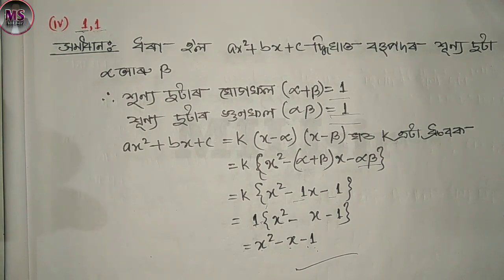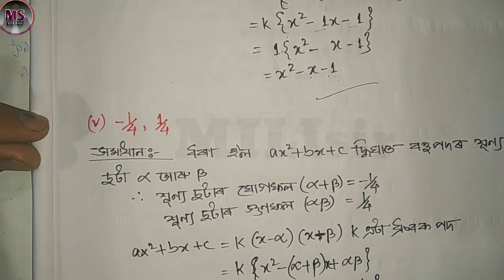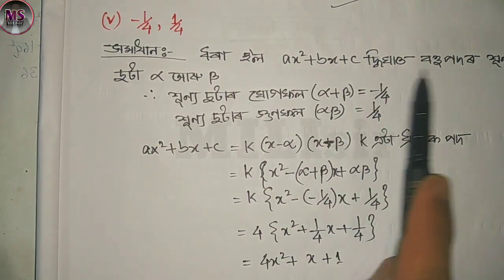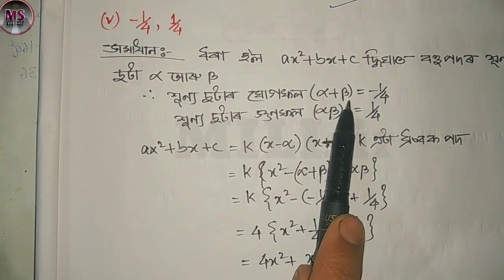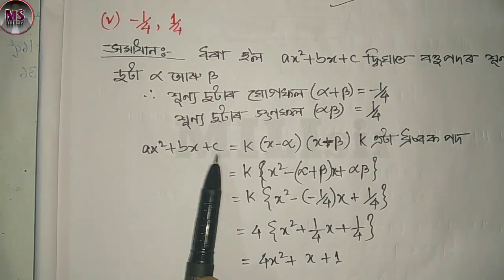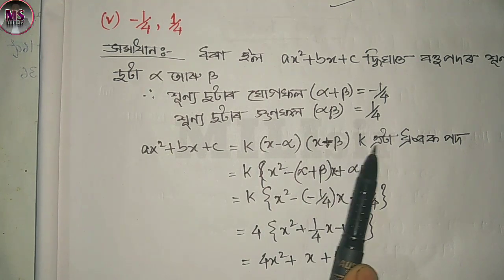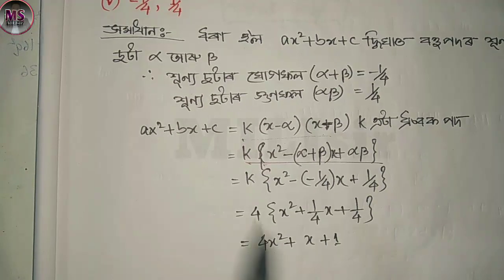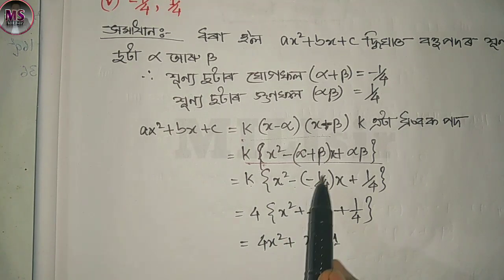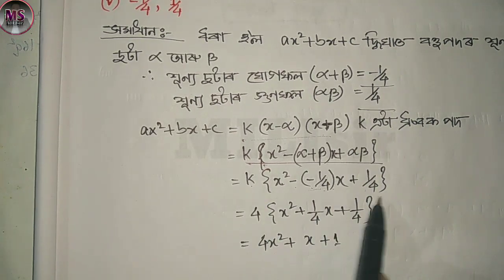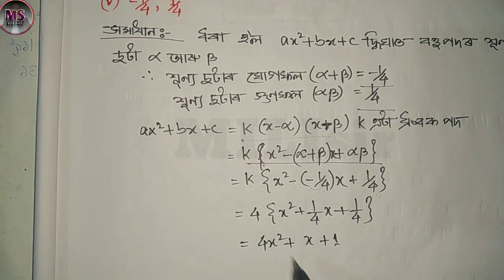If you liked this video, please subscribe to the channel. The next question: the roots are 1 by 4 and 1 by 4. So x squared plus b x plus c equals alpha, where alpha plus beta equals minus 1 by 4. Then x squared plus b x plus c equals x minus alpha times x minus k, and x squared minus alpha into 1 by 4.